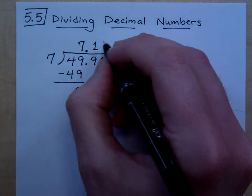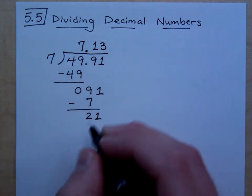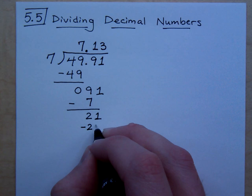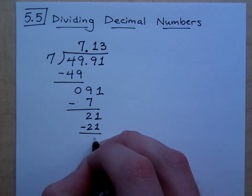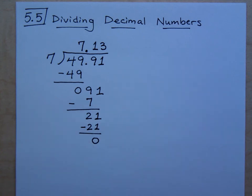And then 7 goes into 21 three times. So 3 times 7 is 21. And then I have a remainder of 0. So is that too bad? No.